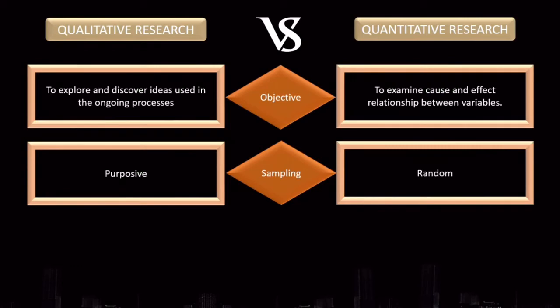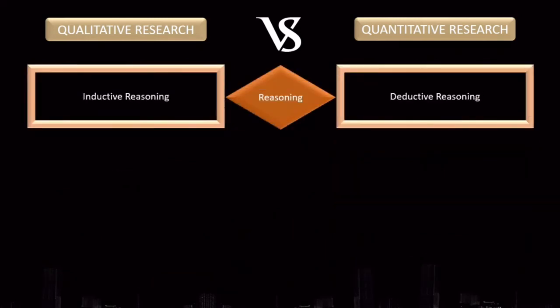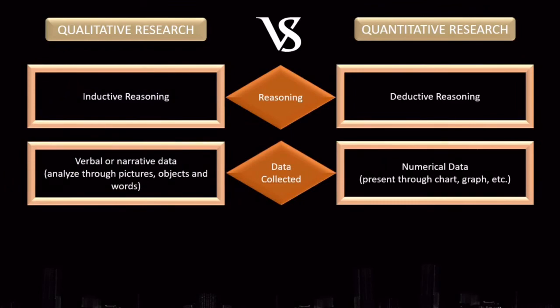Qualitative research uses purposive sampling while quantitative research uses random sampling. The type of research: qualitative is exploratory while quantitative is conclusive. The reasoning of quantitative research is deductive. The data collected in qualitative research is verbal or narrative, analyzed through pictures, objects, and words, while quantitative data is numerical.